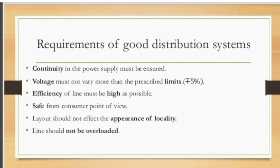Voltage must not vary more than permissible limits — plus or minus five percent. Currently, plus or minus six percent variation is also allowable. Voltage should remain constant; excessive voltage fluctuations can damage equipment. All equipment used in homes is designed to allow plus or minus 5 percent variation. For example, if 230 volts is the rated voltage, then 216 volts to 242 volts is the allowable range.